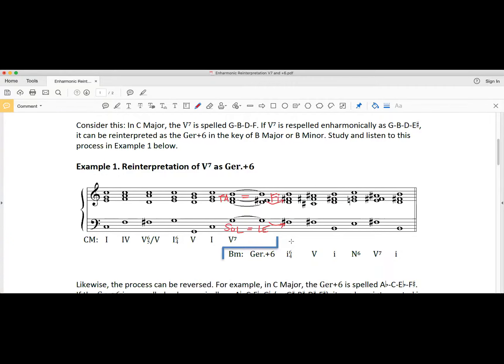Let's take a listen to this example. Again, it's another way to get from one key to a distantly related key very quickly, very swiftly. That was C major with no sharps or flats going to B minor with two sharps, a distantly related key.